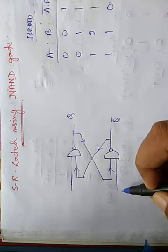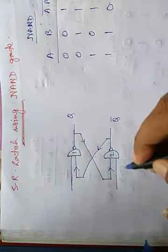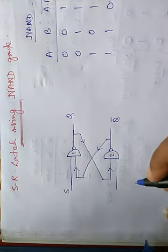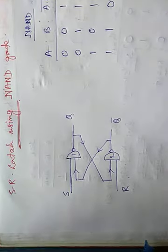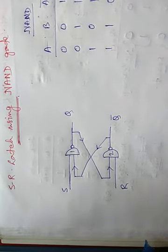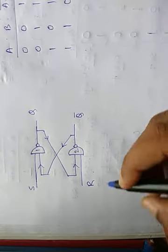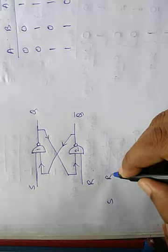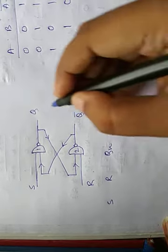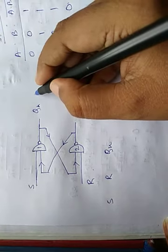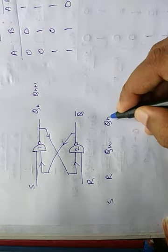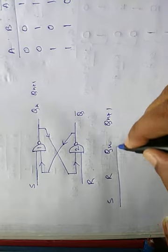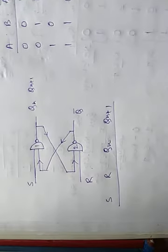In NOR gate latch we wrote S in the lower gate and R in the upper gate, but here we write S in the upper gate and R in the lower gate — that is the difference. Everything else is the same as before. The state table columns are: S, R, Qn, and Qn+1 (next state).